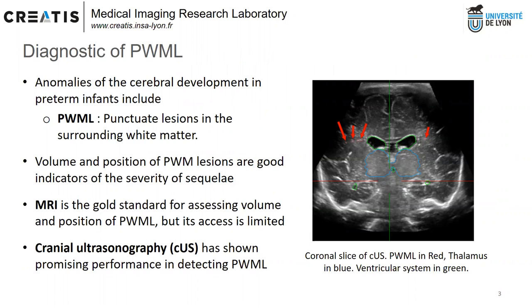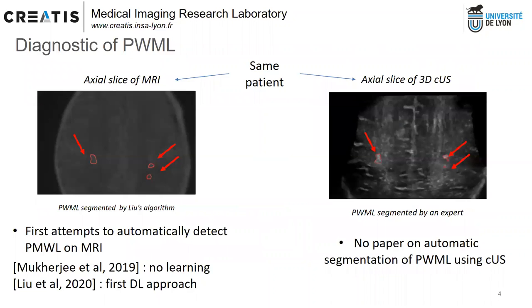For now, MRI is the gold standard for assessing these lesions, but its access is limited. So our team is investigating the performance of CUS, cranial ultrasonography. Good performance of CUS is illustrated on this slice, comparing images of the same neonate patient acquired with MRI on the left and CUS on the right.